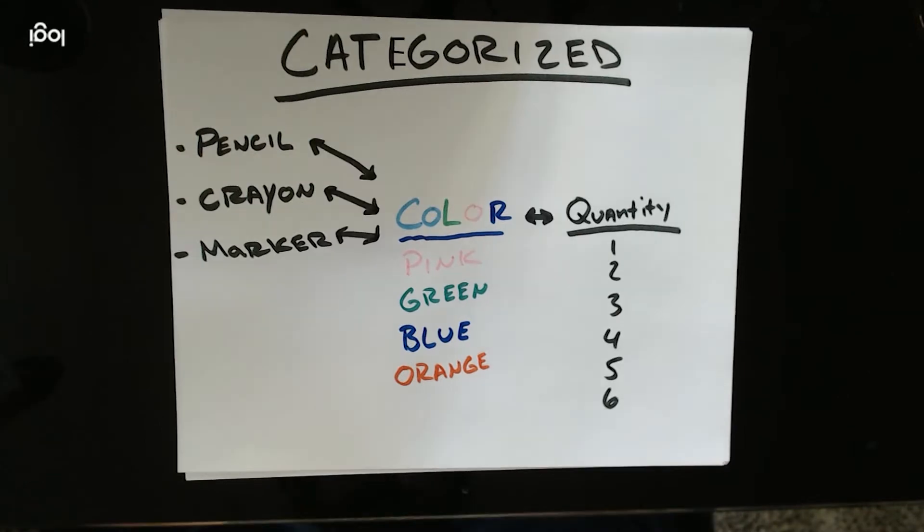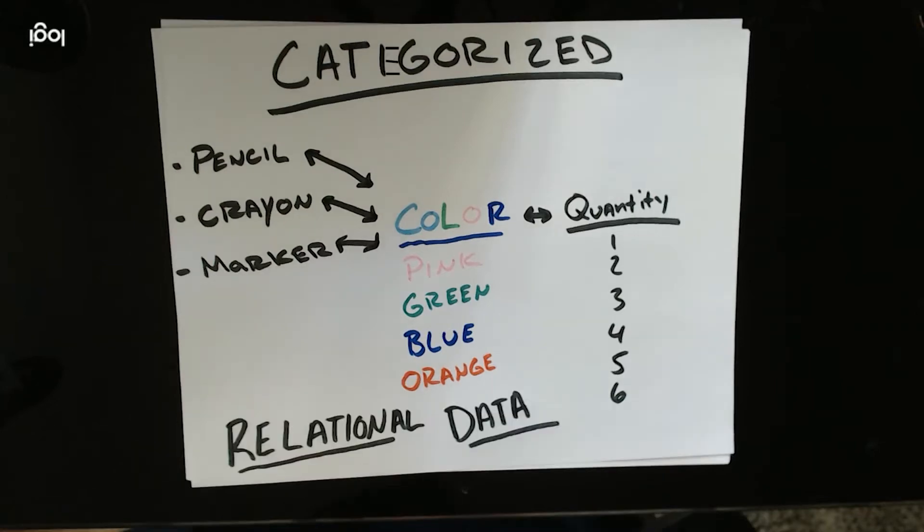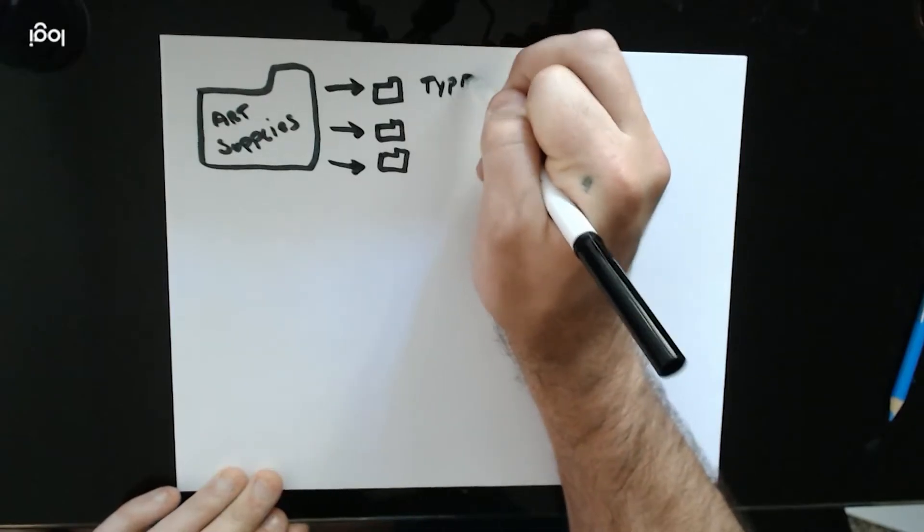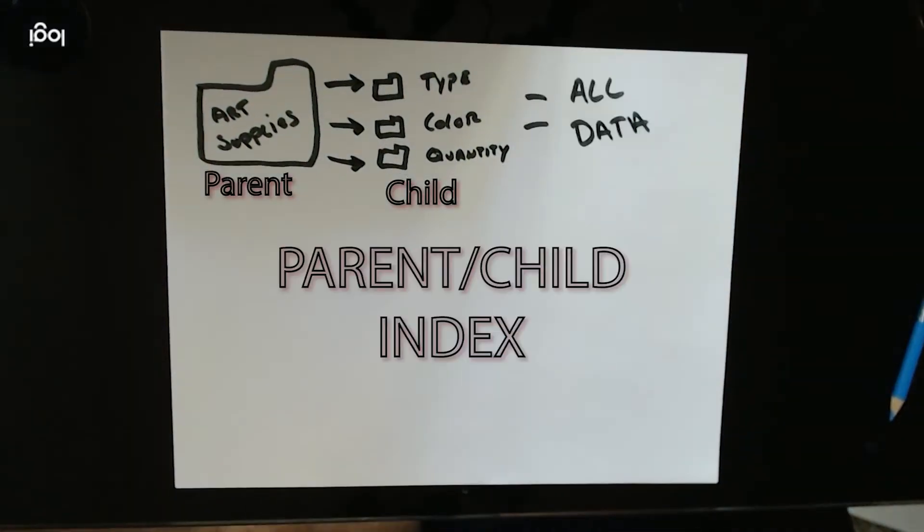And since each item in the art set uses one of these data types, they can be shared, known as relational data types, or stored within a file to create a parent table index. And though it may seem organized, it is not managed.